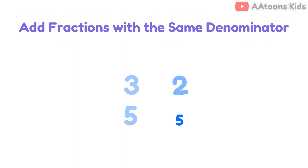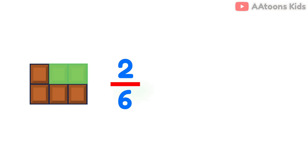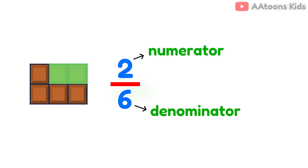In this video we will learn how to add fractions with the same denominators. Imagine you have a chocolate bar and you break it into six equal pieces. If you eat two out of six pieces, we write it as 2 over 6. The top number 2 is called the numerator and the bottom number 6 is called the denominator.